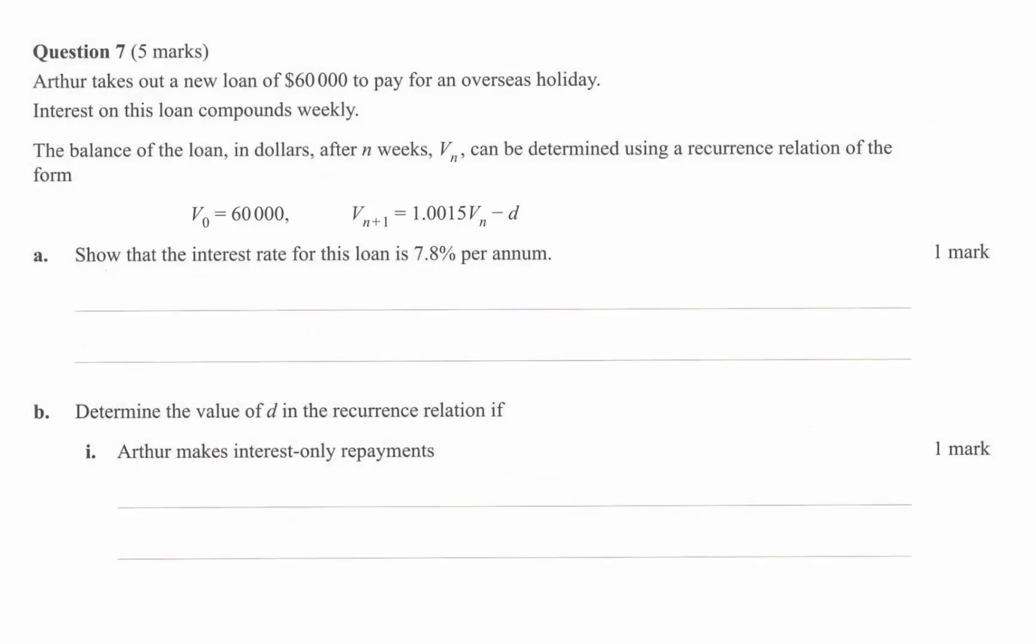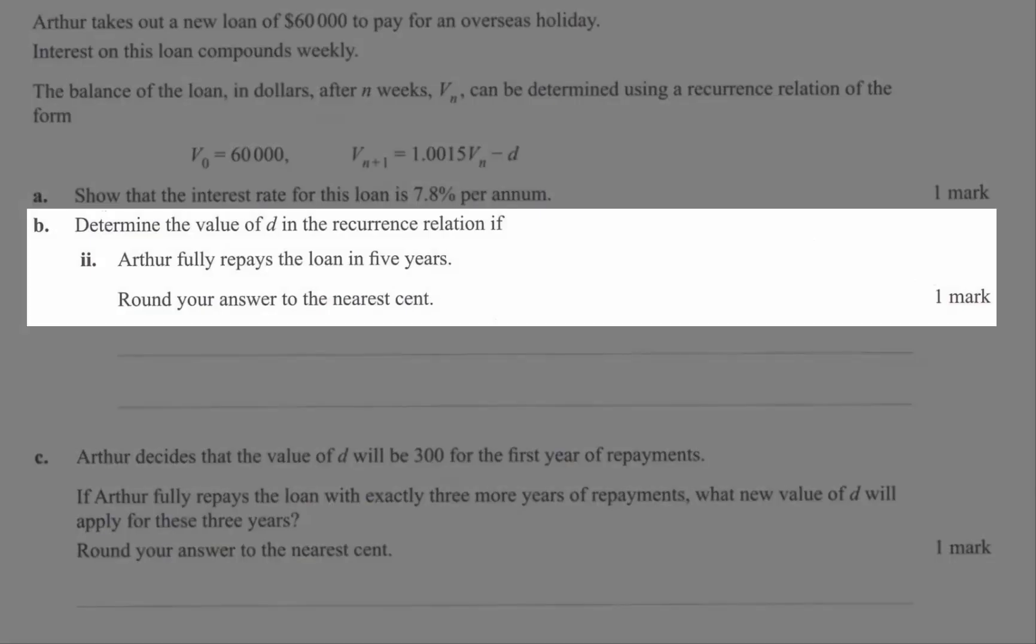First part of the question show the interest rate is 7.8% per annum. No problems with that. Second part, determine the value of D if Arthur makes interest only repayments. Also that is fine. I want to skip down to B part 2. Determine the value of D in the recurrence relation if Arthur fully repays the loan in five years.